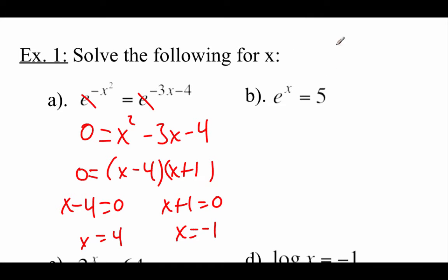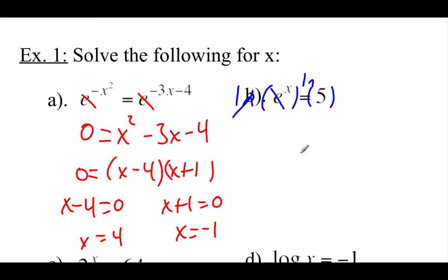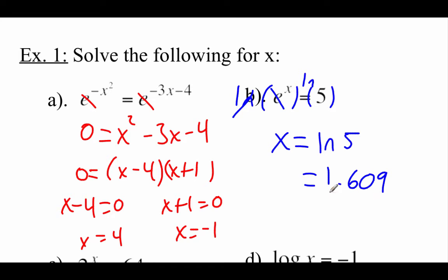Taking a look at our next example: we've got e to the power of x equals 5. I'm going to use my inverse property on this one. In order to get rid of a base e exponential, I'm going to need a base e logarithm — remember, another name for that is a natural log. So I take the natural log of both sides. The natural log of e to the x: this base e logarithm cancels with that base e exponential, leaving just x on the left. On the right we have the natural log of 5, so x equals ln(5), which is about 1.609.